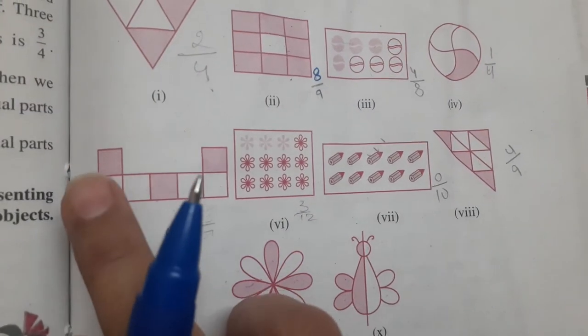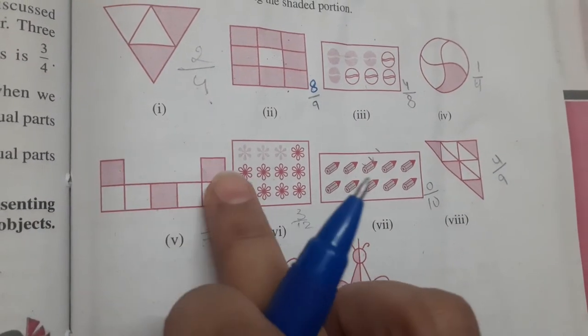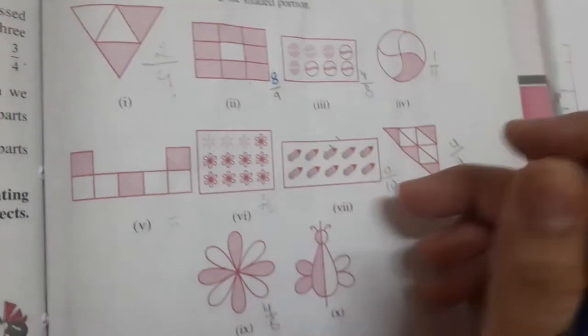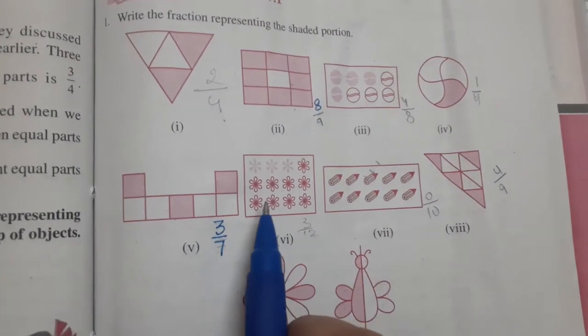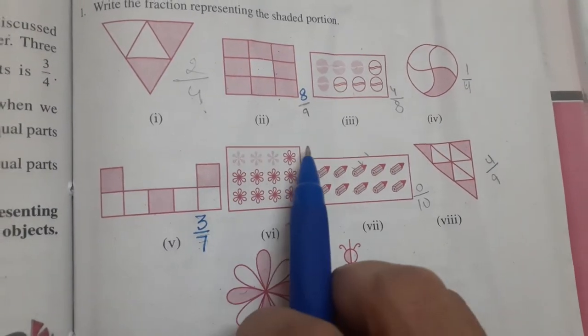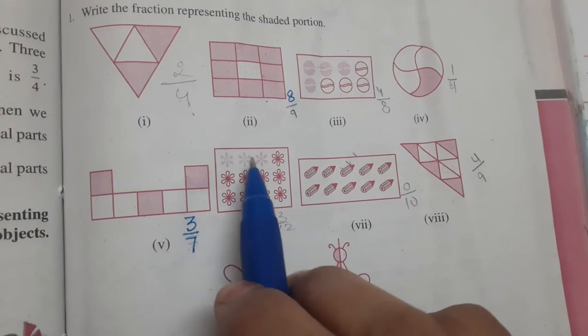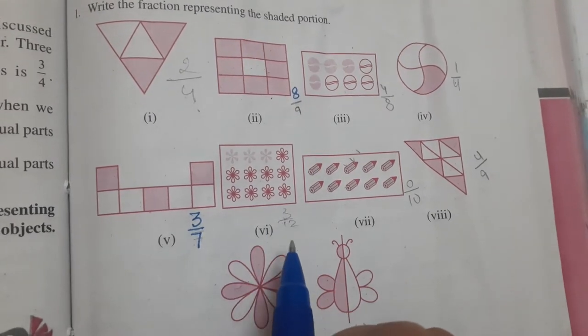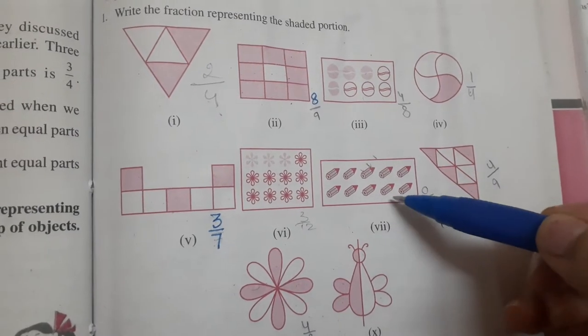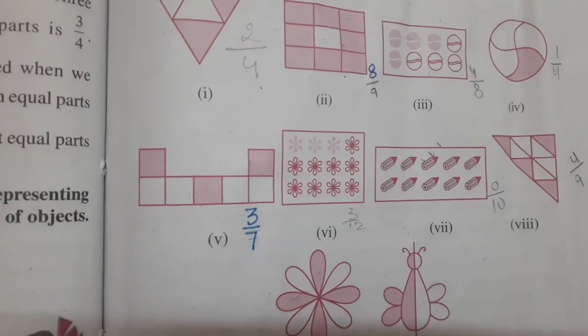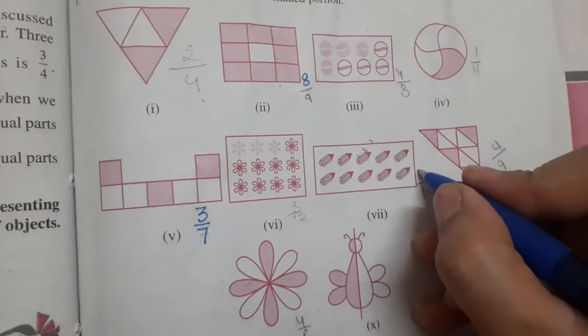Here, 1, 2, 3, 4, 5, 6, 7, total are 7 parts and 3 are shaded among 7, so the fraction is 3 by 7. Now here, 12 flowers are there and out of 12, 3 are shaded, so the fraction is 3 by 12. 10 pencils are there.